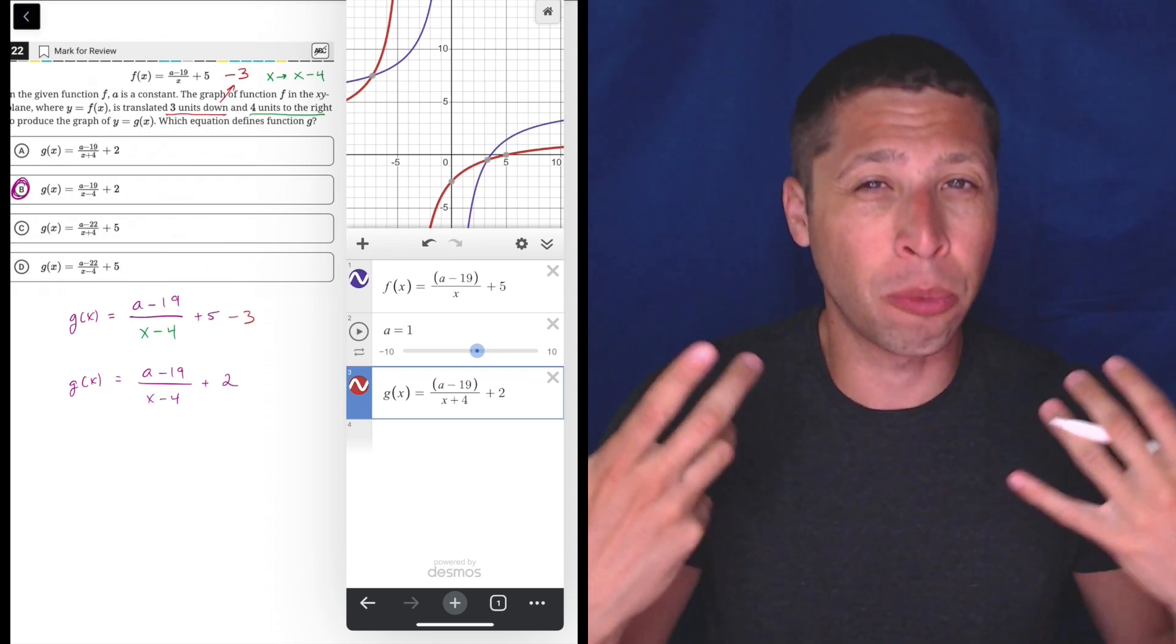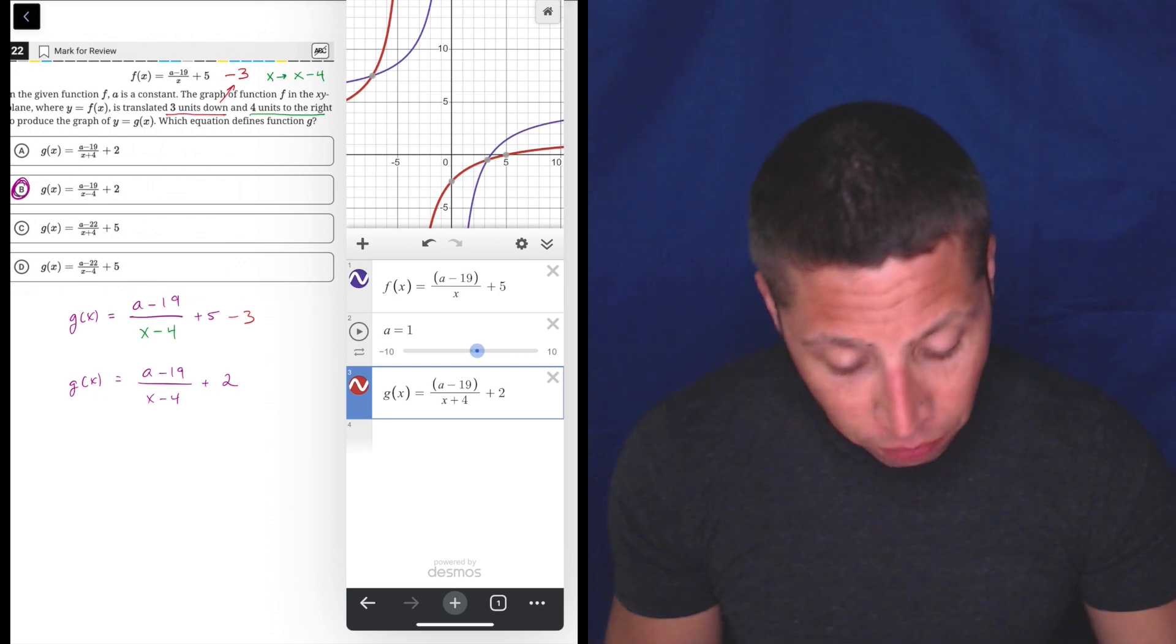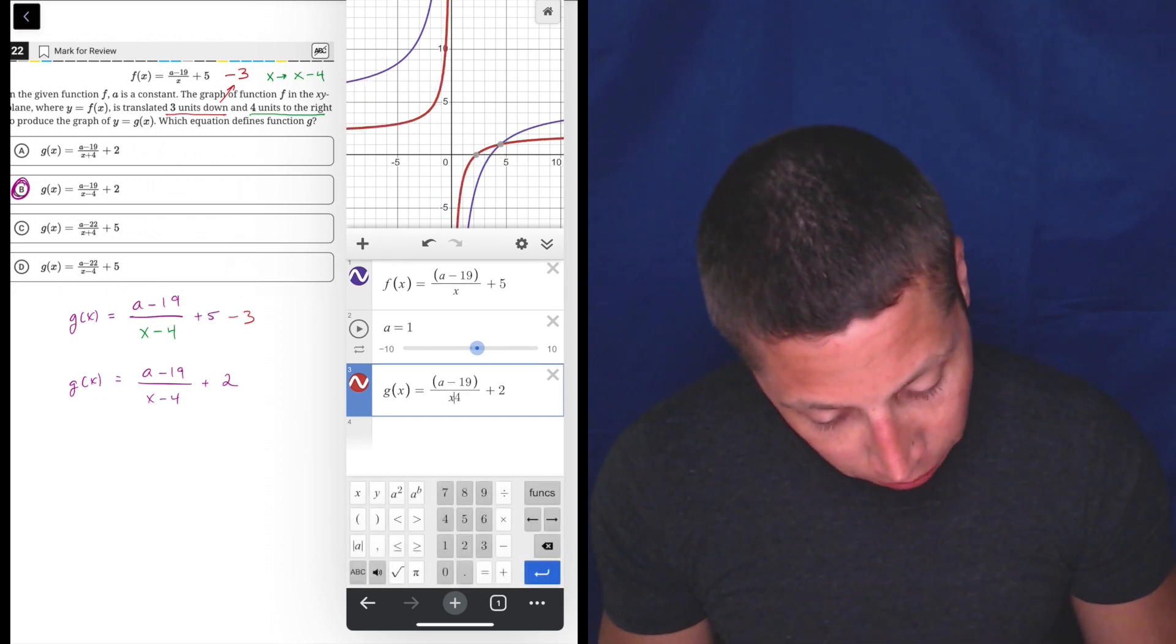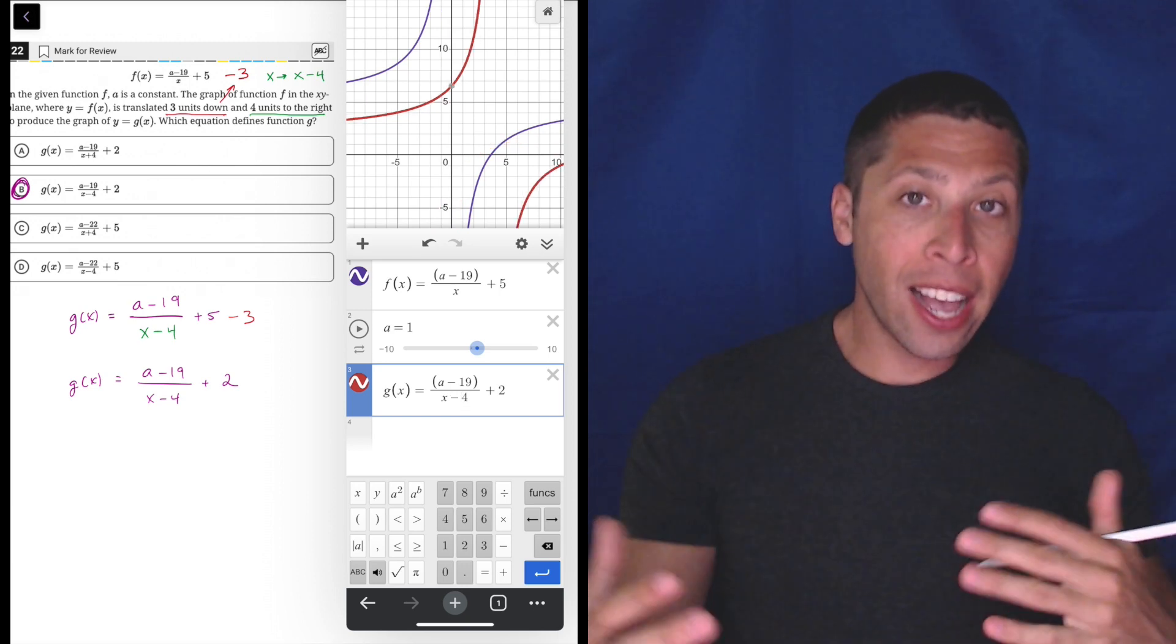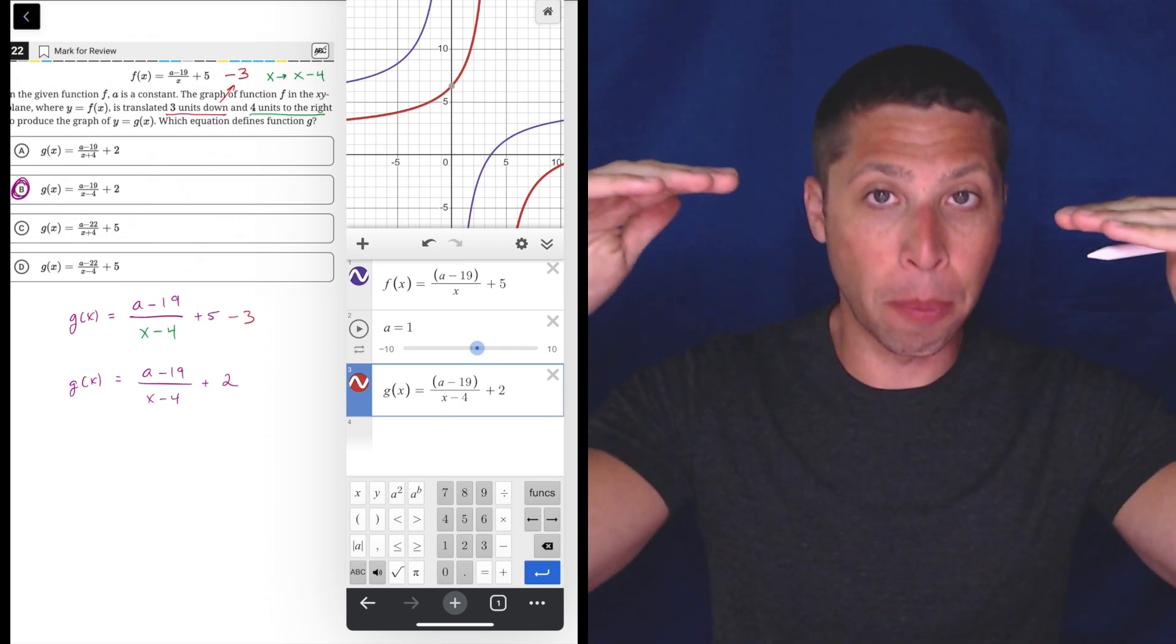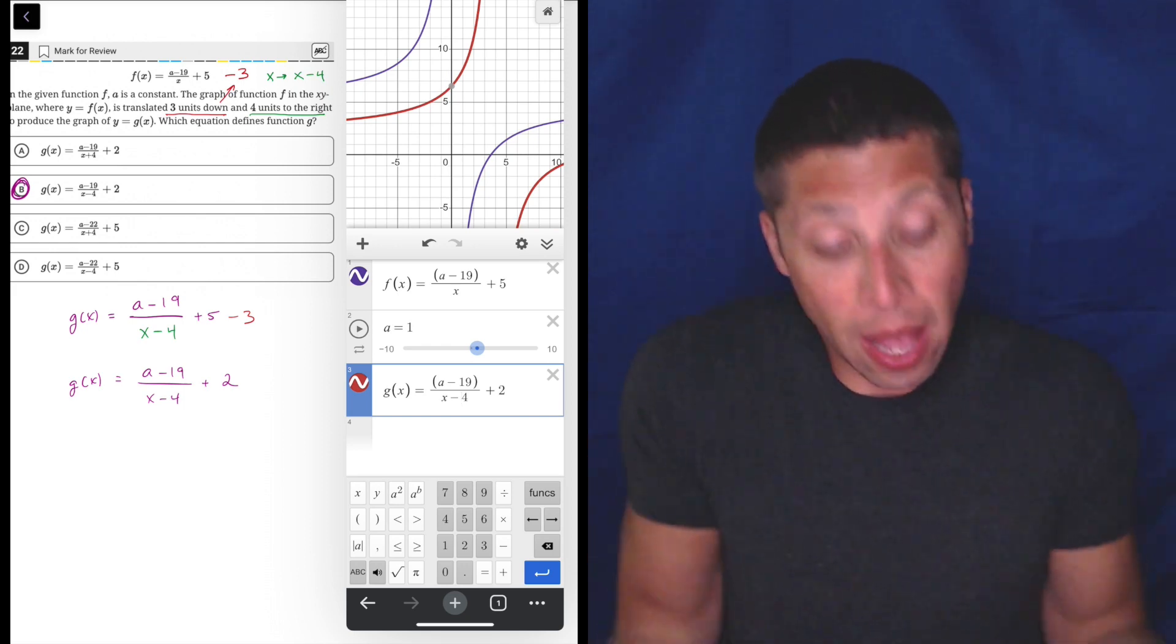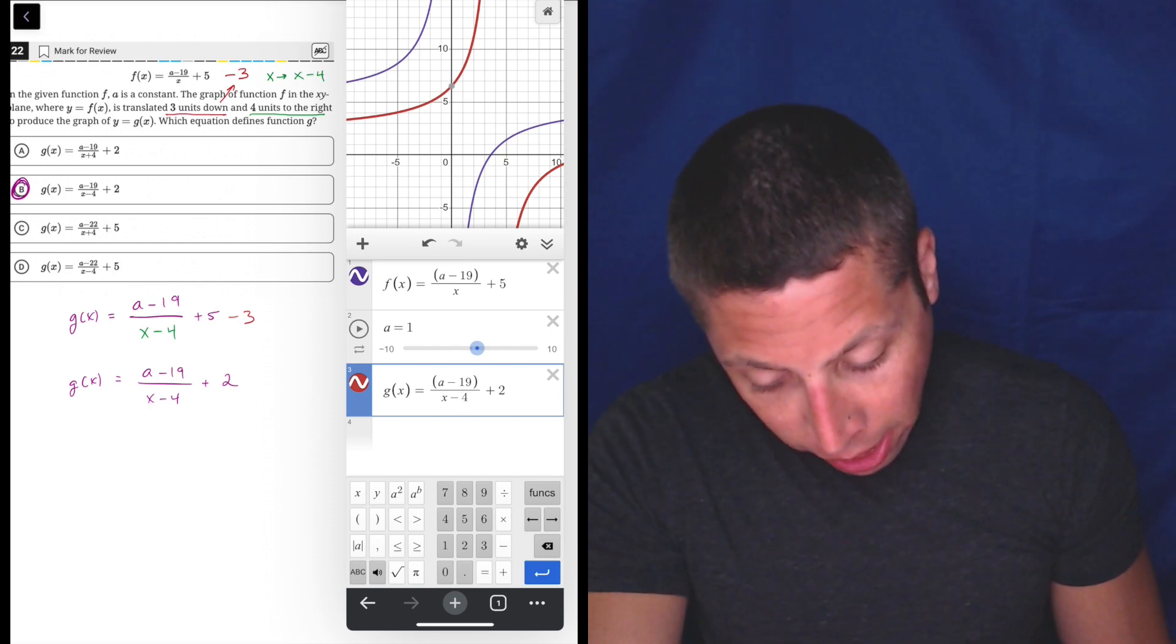But now we have Desmos to kind of just, with our eyes, be able to see that it's the wrong direction. So if I compare that to the right answer, which would just be switching this x plus 4 for an x minus 4, then we can see, yeah, it's still not easy to count the boxes here because there's no clear landmarks. But it does look like the purple to the red is a movement down and to the right. So that would probably be good. But we'd want to try the other choices as well.